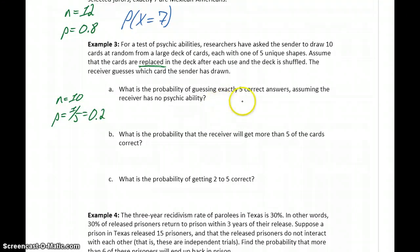In part A, what's the probability of guessing exactly five correct answers, assuming the receiver has no psychic ability? So we want to calculate the probability that our number of correct guesses would be exactly five out of 10.